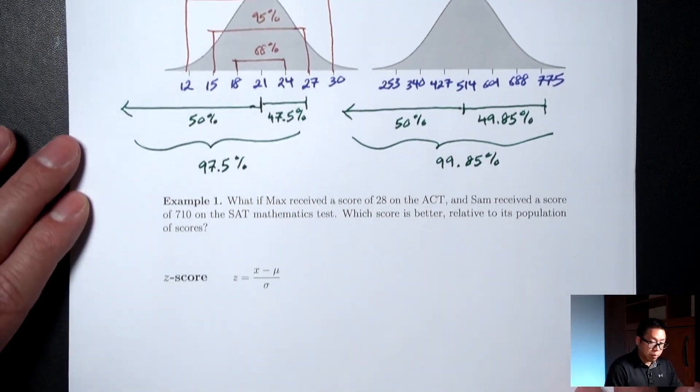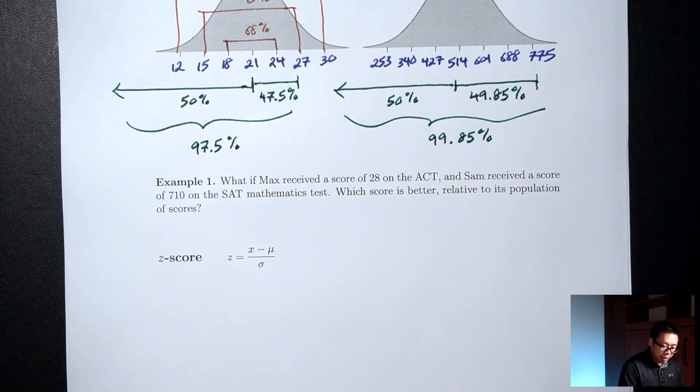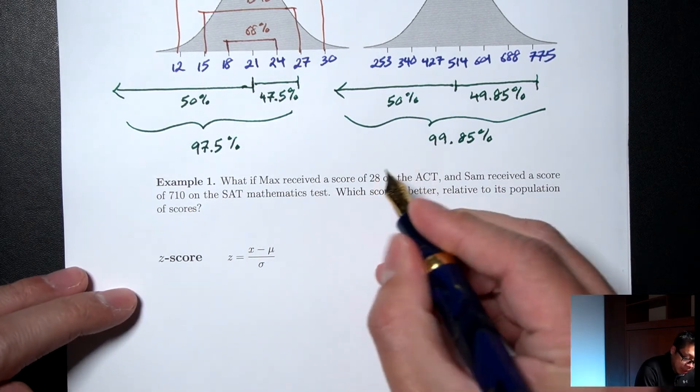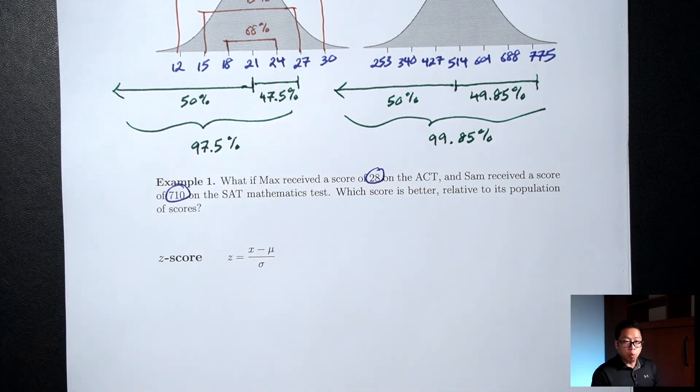Let's now take a look at example 1. So in example 1 now, Max got a 28 on the ACT and Sam got a 710 on the ACT. Same question, which score is better?